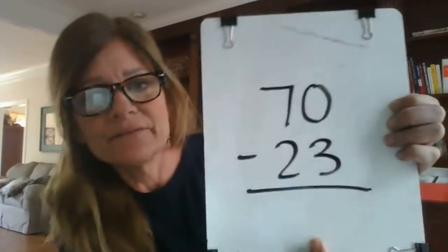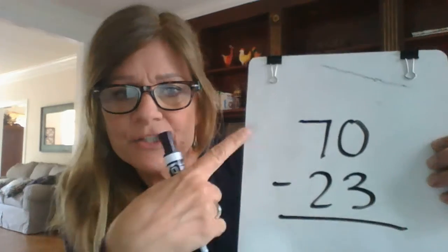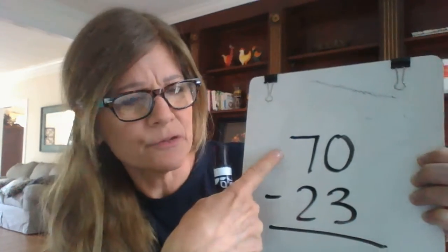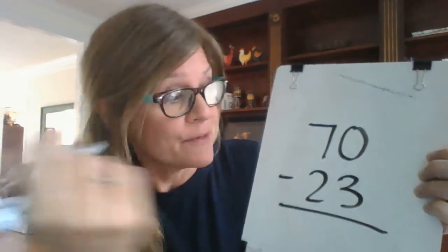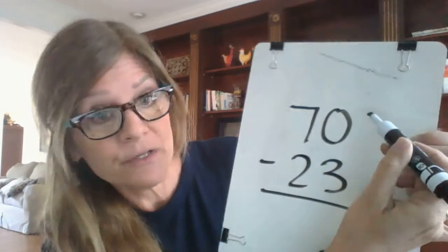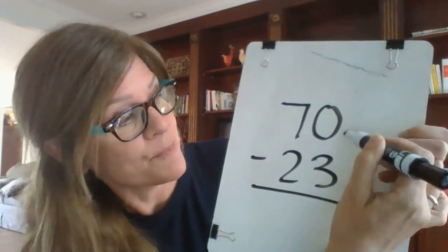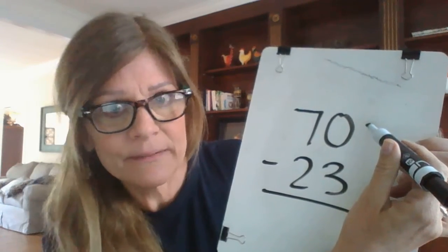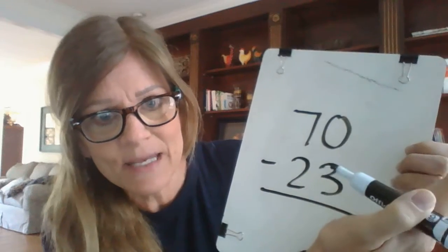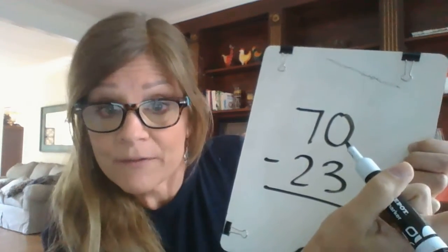Let's try another one. 70 minus 23. I chose 70 on purpose because some students get a little thrown off by that zero. Zero is just a number like any other number. And we're just going to treat it like any other number. So we're going to start in our ones column and we're going to ask ourselves, zero minus 3. Can I take 3 away from zero? And the answer is no, you can't. If you have zero, you can't take any away because zero is nothing. That means you have to regroup.